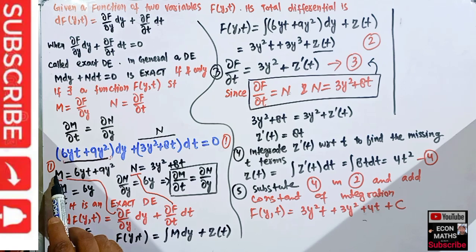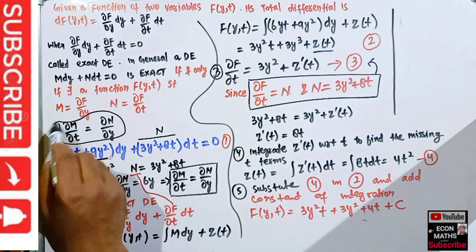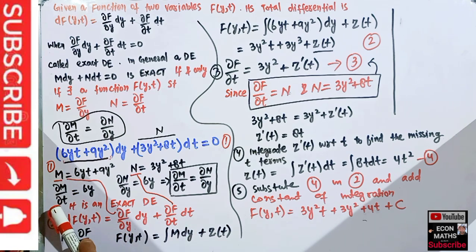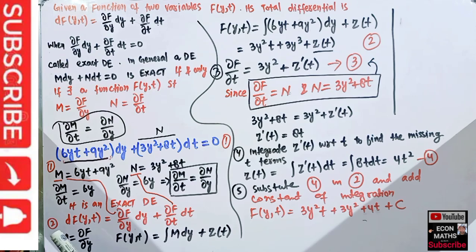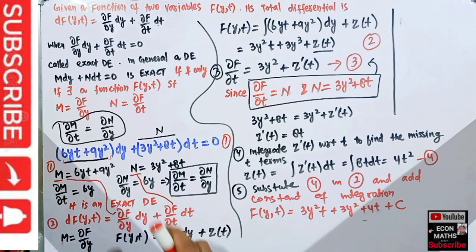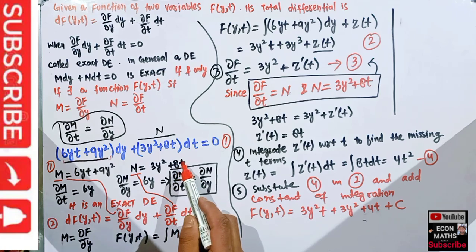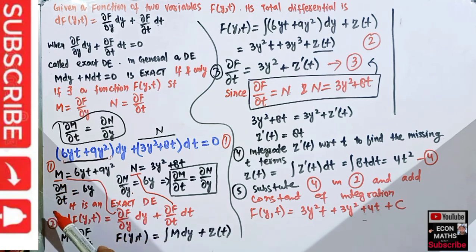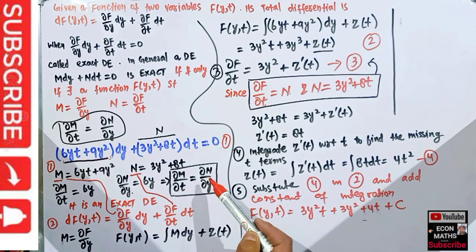Here M = 6yt + 9y² and N = 3y² + 8t. Taking the partial derivative of M with respect to t: ∂M/∂t = 6y (since the derivative of 9y² with respect to t is 0). Taking the partial derivative of N with respect to y: ∂N/∂y = 6y (since the derivative of 8t with respect to y is 0). Since ∂M/∂t = ∂N/∂y = 6y, the given differential equation is exact.